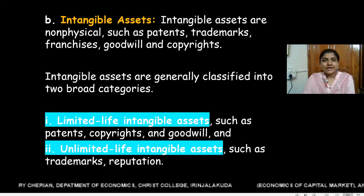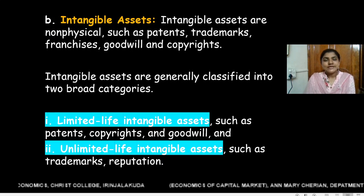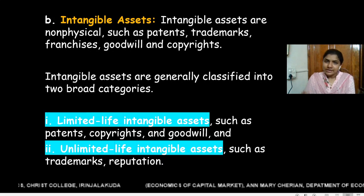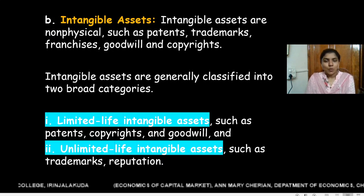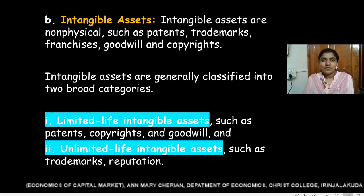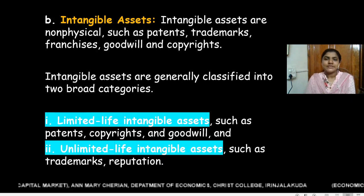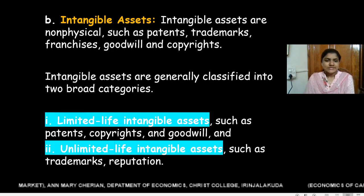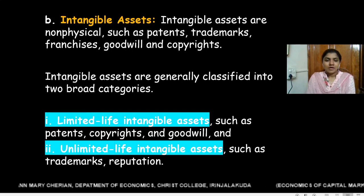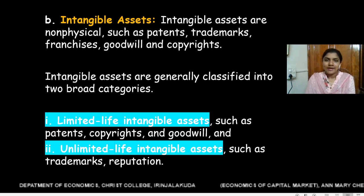Intangible assets are generally classified into two broad categories: limited life intangible assets and unlimited life intangible assets. Limited life intangible assets have a limited lifespan — for example, patents and copyrights, which are valid for only a few years. Unlimited life intangible assets have an unlimited or long lifespan, such as a trademark or the reputation of a company, which will stay as long as the company exists.